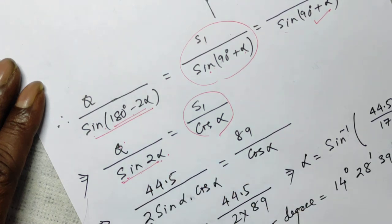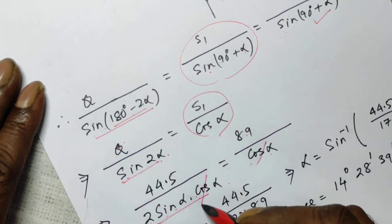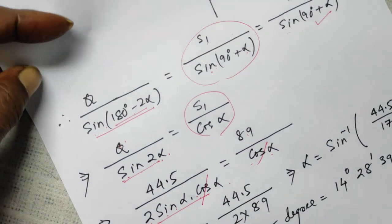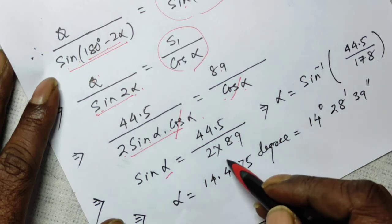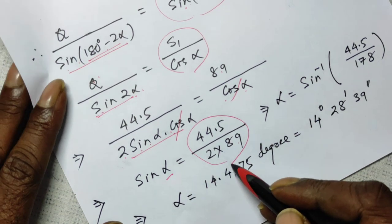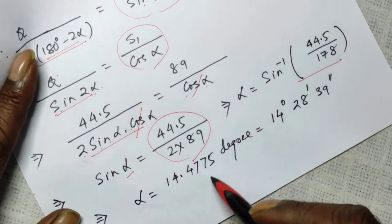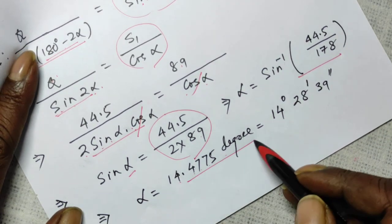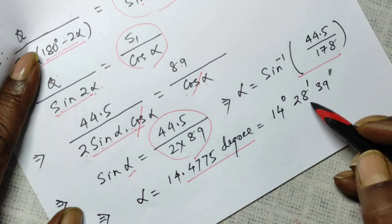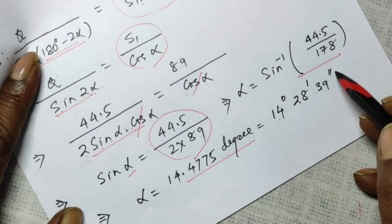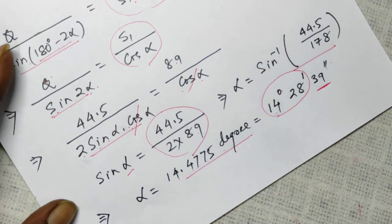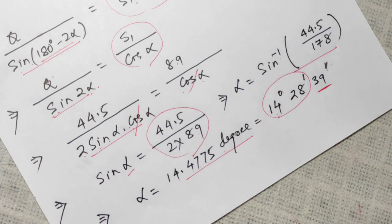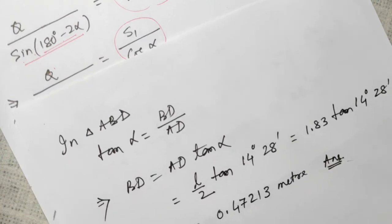Applying the formula sin(2α) = 2·sin(α)·cos(α) and substituting Q = 44.5 N and S1 = 89 N: cross-multiplying, the cos(α) cancels, giving sin(α) = 44.5 / (2 × 89). Therefore alpha = sin⁻¹(44.5/178), which comes out to be 14.4775°, or equivalently 14 degrees 28 minutes 39 seconds of arc.